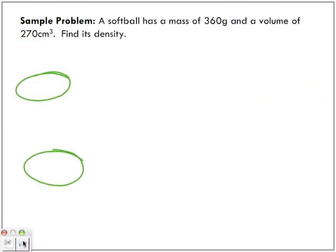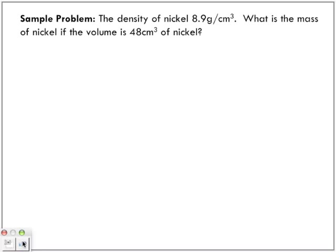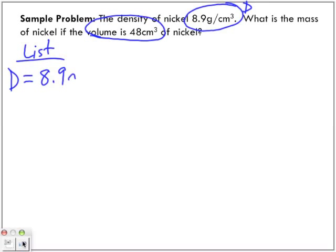Let's look at one more sample problem. Sample problem. The density of nickel is 8.9 grams per centimeters cubed. That is my D. What is the mass of nickel? That's the question we're asked if the volume is 48 centimeters cubed. So let's list. So we've got my list. And my list is D is equal to 8.9 grams per centimeters cubed. We've got V is equal to 48 centimeters cubed.